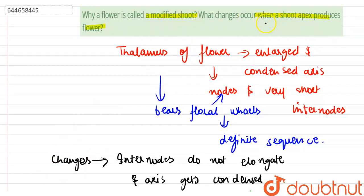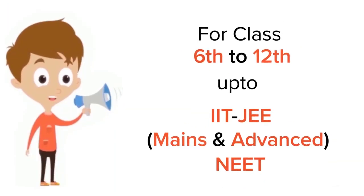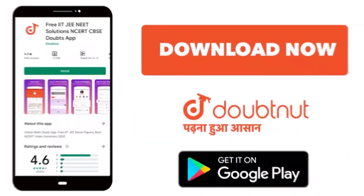Why is a flower called a modified shoot and what changes occur when a shoot apex produces flower? Thank you. For class 6-12, IIT JEE and NEET level, trusted by more than 5 crore students, download Doubtnet app today.